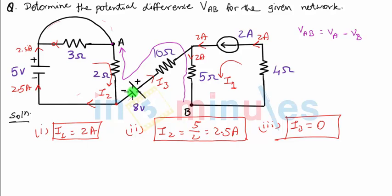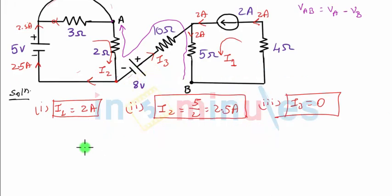All these points indicate that the current in this particular branch will be equal to zero. So I3 is equal to zero. We are now ready to calculate VAB. So what is the definition or what is the approach we are going to use? Start from point B, travel up to point A. Let's do it. The first voltage will be across 5 ohm resistance. 5 current is I1.